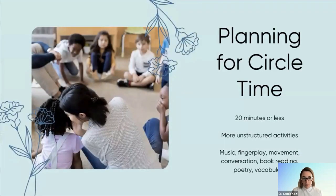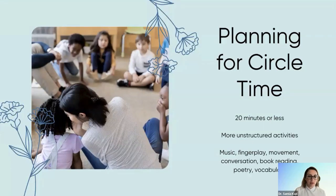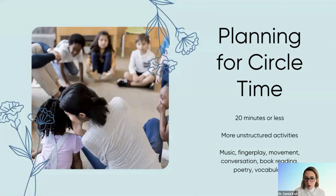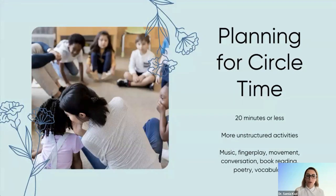Let's talk about planning. Throughout circle time, there's a factor of planning. As an early childhood teacher — or if you're a manager — you know how important it is to have some structure. A plan would typically include: a maximum of 20 minutes or less, more unstructured activities than structured ones, and more activities that allow children to interact with each other — including music, finger plays, movement, conversation, book reading as a group, poetry, and vocabulary.